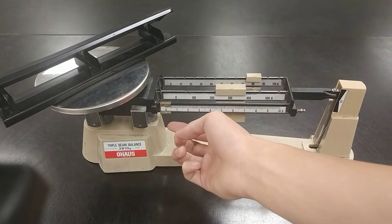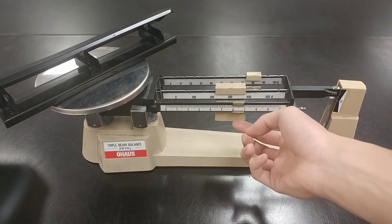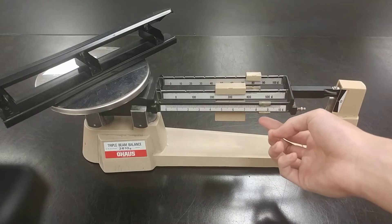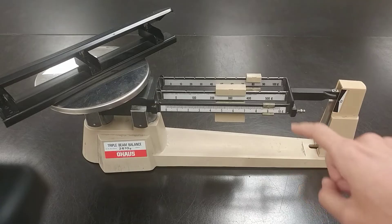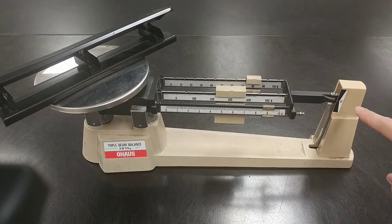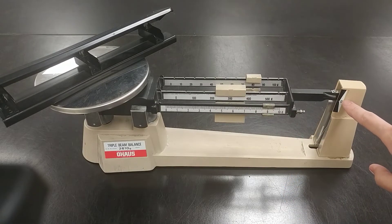And now we move the smallest one until we can get it exactly to zero. Right around 9, it is pretty much exactly at zero.